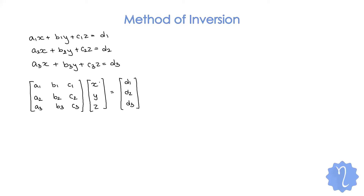Observe: multiplying gives a1·x + b1·y + c1·z = d1, which is the first equation. So we have written these equations in matrix form. The first step is always to convert your system of equations into matrix form. We write it as AX = B, where A is the coefficient matrix and X is the variable matrix we will find, and B is the column matrix on the other side.